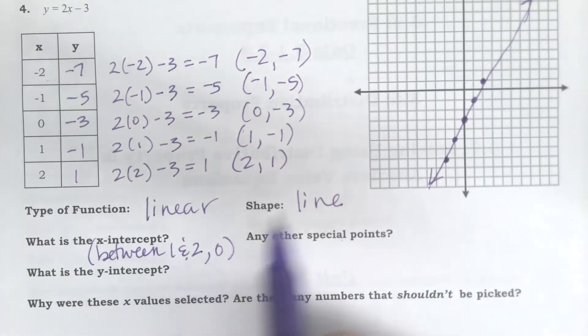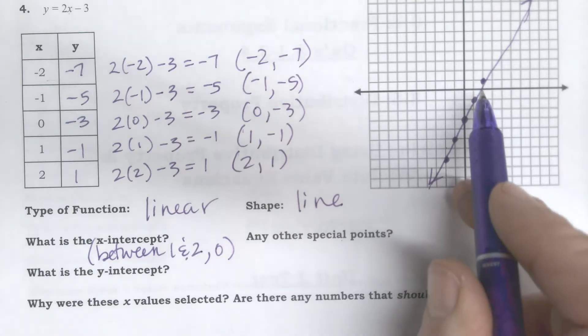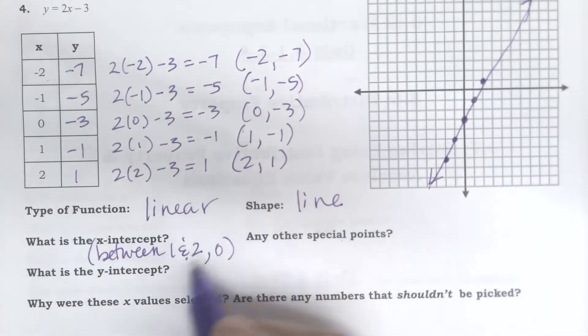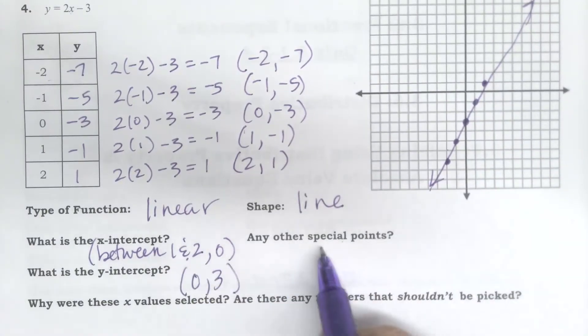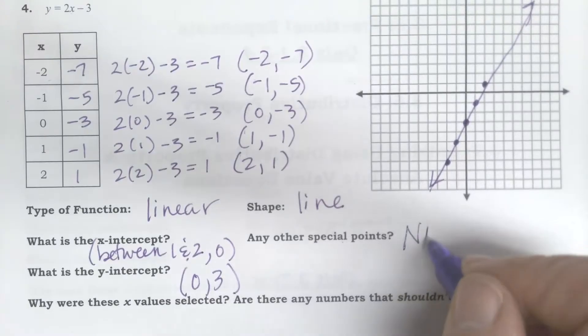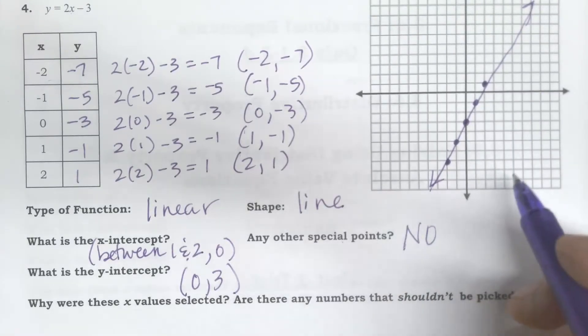That's not real specific. I could approximate maybe like 1.9, it's real close to that. I guess it depends on how I draw my line. What is the y-intercept? Where it crosses the y-axis, that's the point 0, negative 3. Are there any other special points? I don't see anything special on here. They're just a bunch of points that fall in a line.